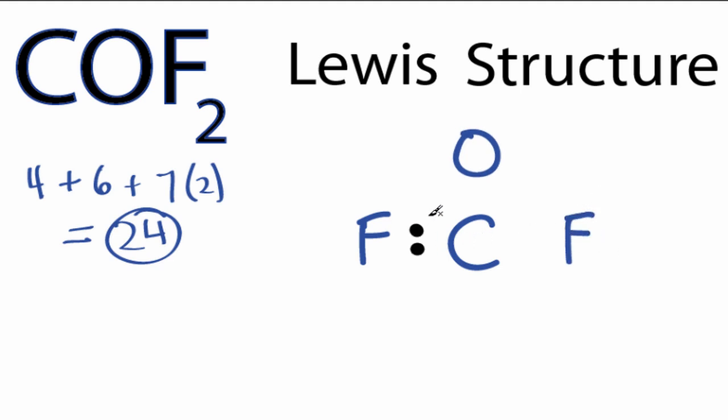We put 2 electrons between atoms to form a chemical bond, and then around the outside. So we've used 2, 4, 6, 8, 10, and 24. So at this point we've used all 24 valence electrons.